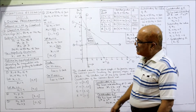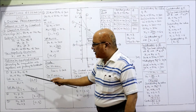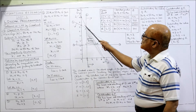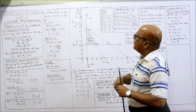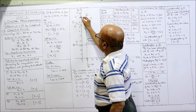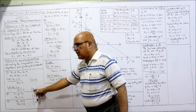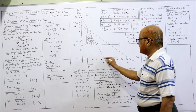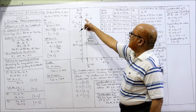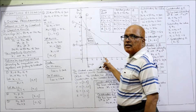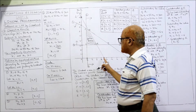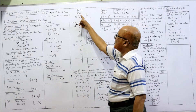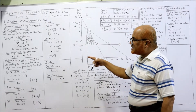Now we plot the points. First coordinate: when x1 = 0, x2 = 9 — mark here at 9 on y-axis. When x1 = 9, x2 = 0 — mark at 9 on x-axis. Join these two points, extend the line, and write it as line 1 because this is the first constraint and it is less than or equal to type.